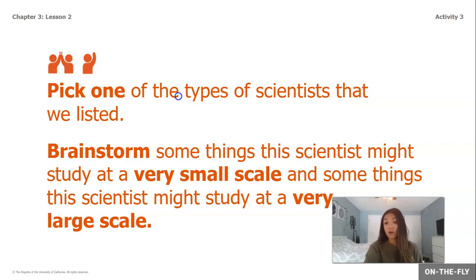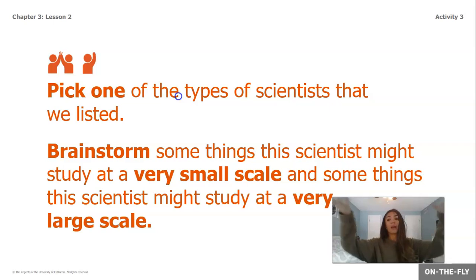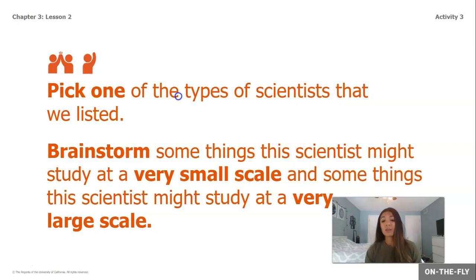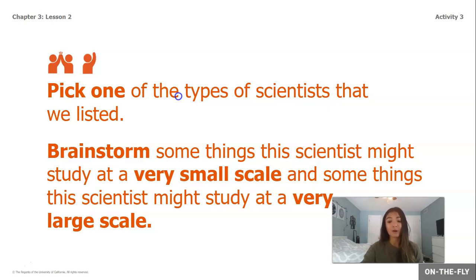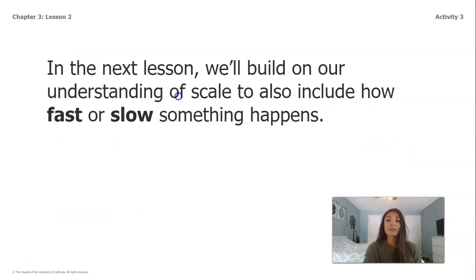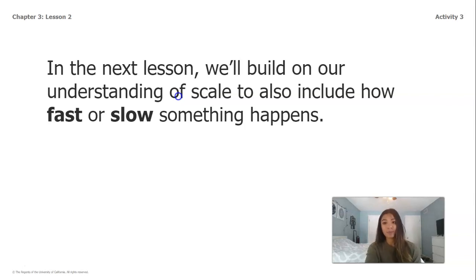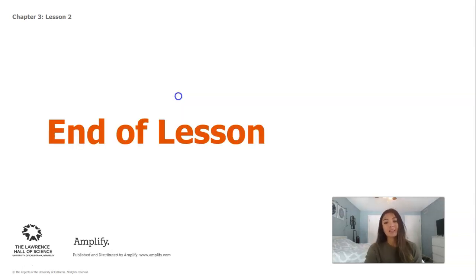For example, if a space scientist is studying a planet, they're not going to be able to bring an entire planet here to look at it, so they need to look at it on a smaller scale. For fossils, some are really, really small and scientists might need to think about them on a bigger scale to better investigate. In our next lesson, we're going to build on our understanding of scale to also include how fast or slow something can happen. Have an awesome rest of your day!